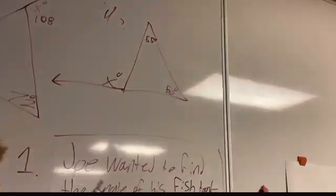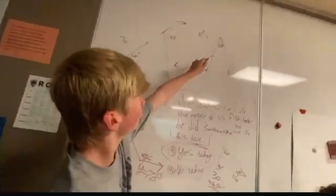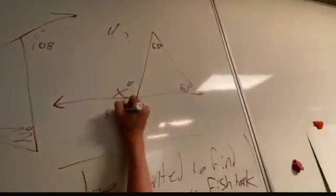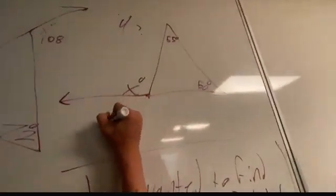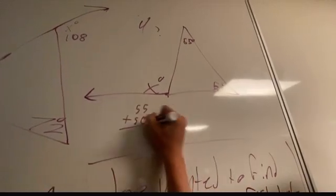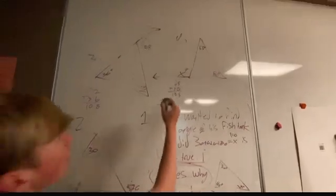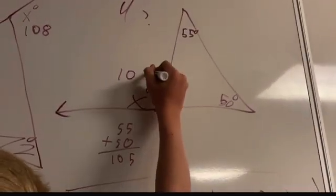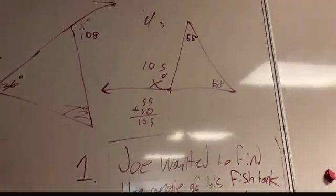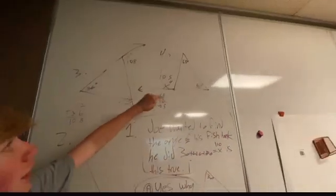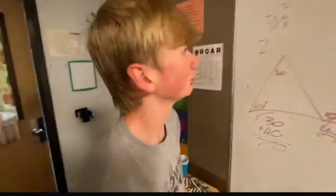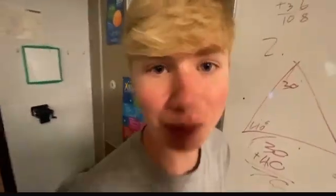Now question four — we have to do the exact same thing: add both of these angles. That gives us 105, so x has to equal 105 in order for everything to equal 180, and that is our problem.